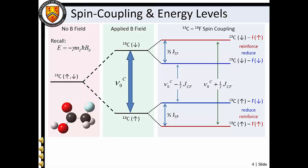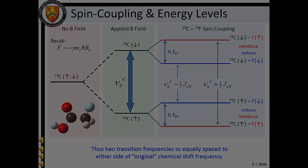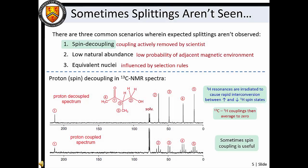NMR splitting patterns provide an excellent means of deducing molecular structure. Be aware, though, that sometimes splittings are not observed when they might otherwise be expected. In spin-decoupled spectra, nuclear spin couplings are removed by irradiating the sample so as to average adjacent magnetic environments to zero.